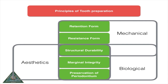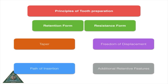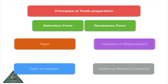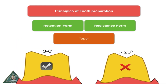Retention and resistance forms are controlled by four factors: taper, path of insertion, freedom of displacement, and additional retentive features. Taper should be a minimum of 3 to 6 degrees — that is the ideal taper.